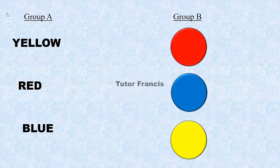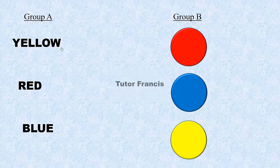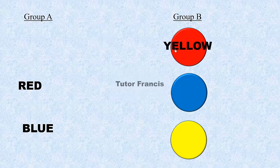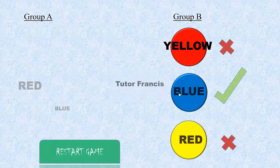In this tutorial we are going to look at how we can create a drag-and-drop activity in PowerPoint using hyperlinks for students. We have items in group A and items in group B, and we want a student to match these items. A student can click yellow and match it with red, or blue and match it with blue.